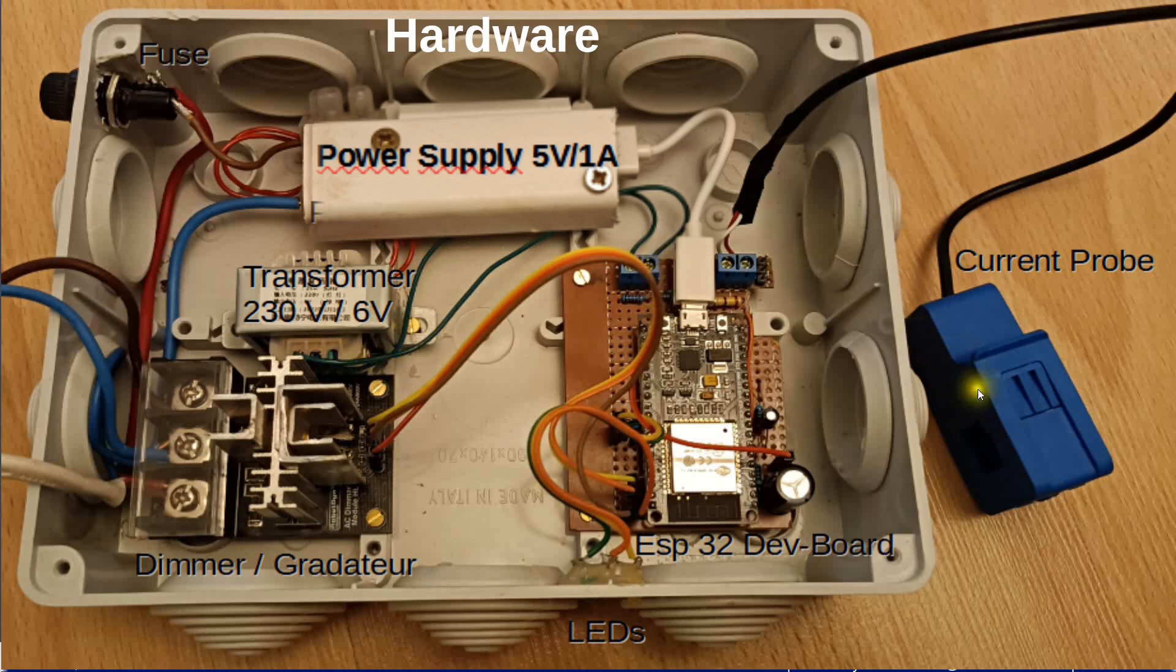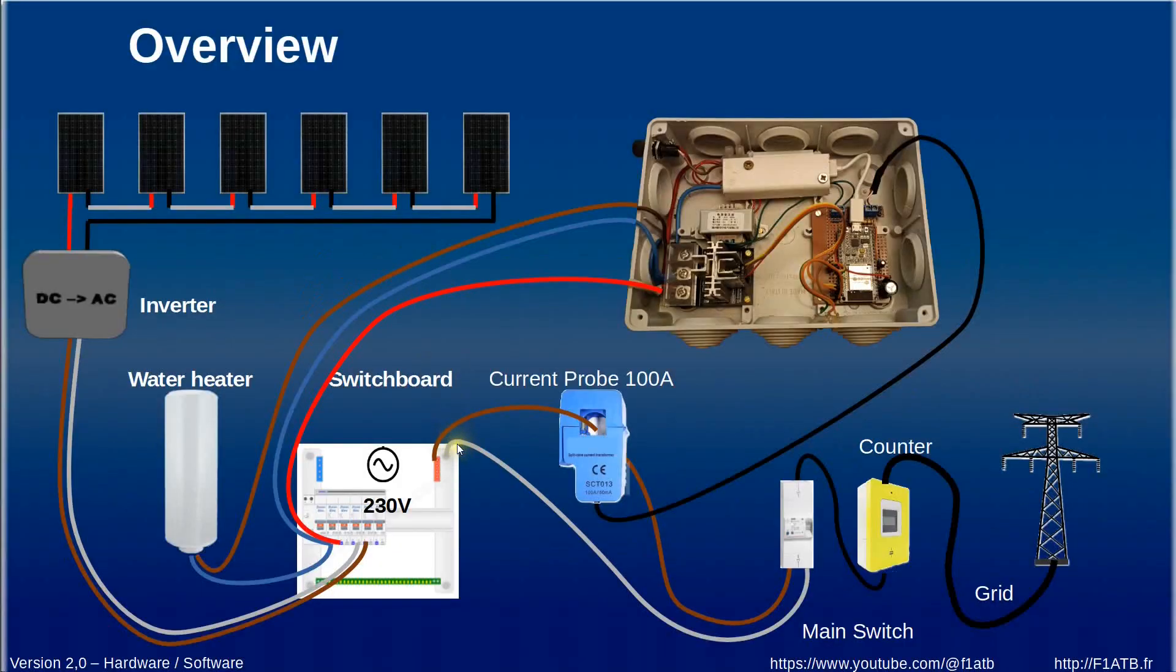and the current probe external current probe is connected here. Here we have an overview of the complete system so the solar panels the inverter it's a simple representation of the complete system, the main switchboard in-house the water heater and here our router the current probe which is connected to the router